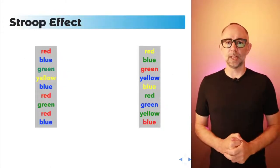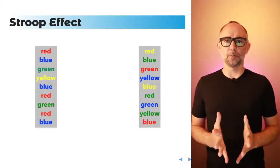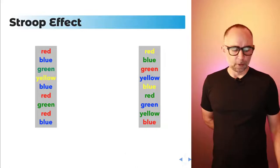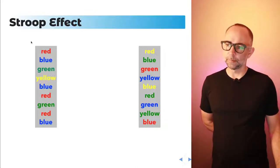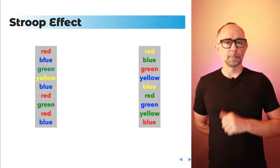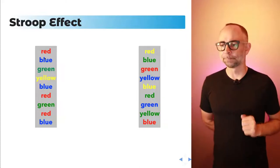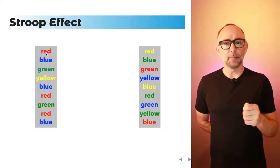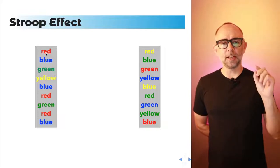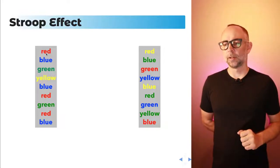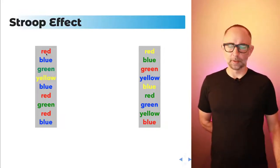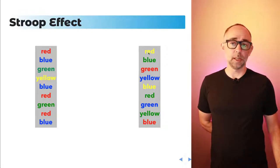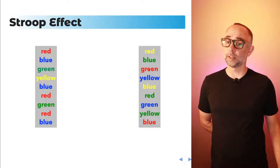Here's an example of the Stroop task. We have words in different colors on both sides. The task is to name the ink color of these stimuli. So this is red, that's blue, that's green. This one here is yellow, and that one's green, and that one's red.